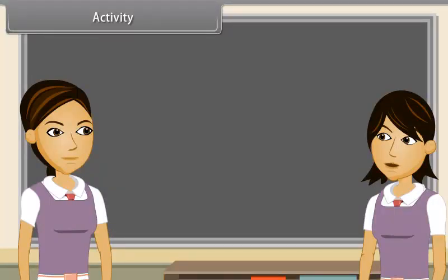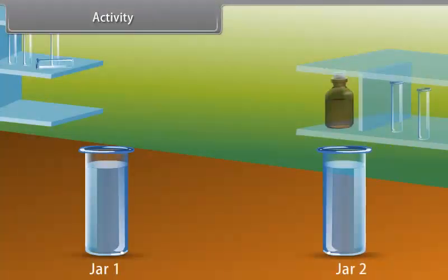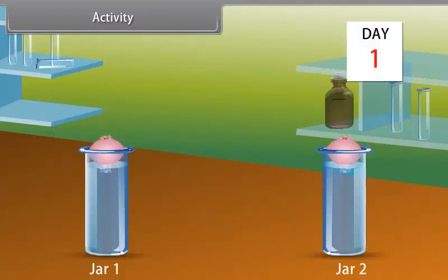We can prove that meristematic tissues are found by doing an activity. I will take a glass jar and Ankita, you will also take a similar glass jar filled with water. Then we will place same sized onion bulb on each jar for 3 days to observe the growth of roots.